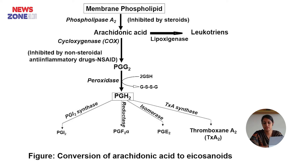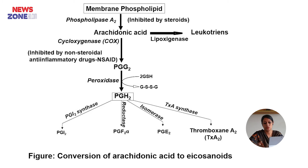Here is the flowchart of synthesis of eicosanoids. First, membrane phospholipid is converted to arachidonic acid by the enzyme phospholipase A2. From arachidonic acid, we get leukotrienes via the lipoxygenase enzyme, and prostaglandin G2 via cyclooxygenase. From prostaglandin G2, the peroxidase enzyme gives us prostaglandin H2. From prostaglandin H2, we obtain prostaglandin I2, prostaglandin F2, prostaglandin E2, and thromboxane A2.